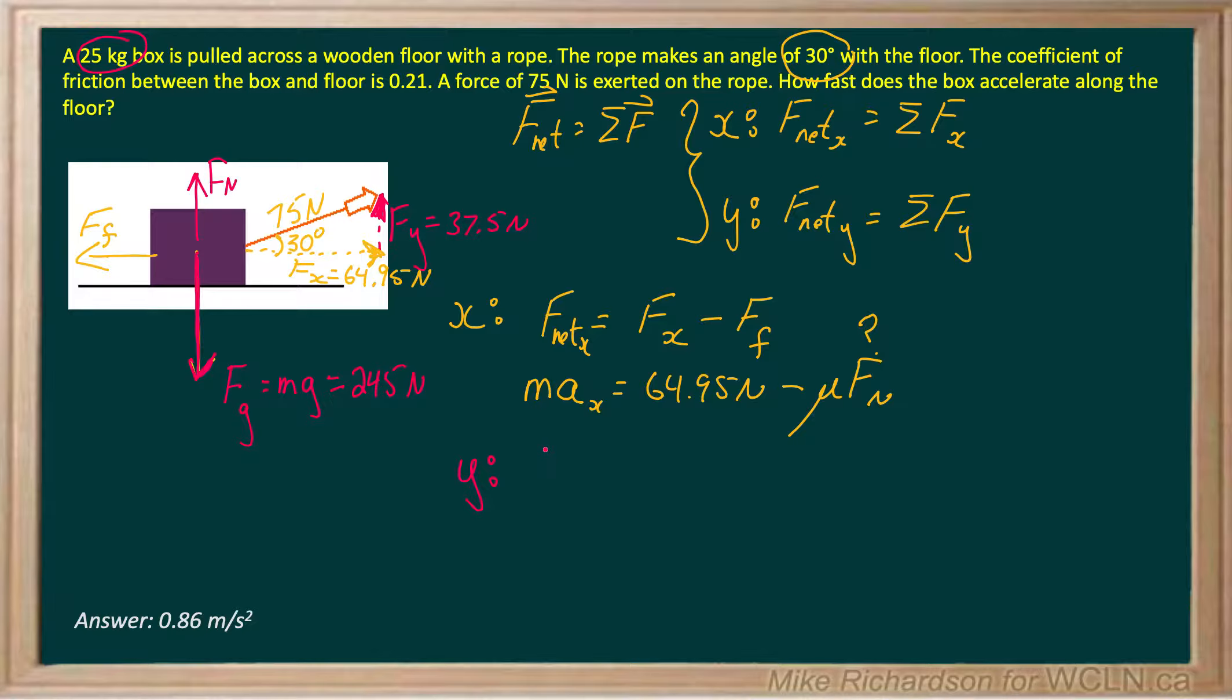The other way to do it is with our equation. We know that our net force in the y is the sum of all the forces in the y. But it's not moving in the y. It's only moving horizontally. It's not moving vertically at all. So my net force in the y is going to be zero. So let's look at all our forces acting in the y. Let's say up is positive. So I've got Fn that's positive.